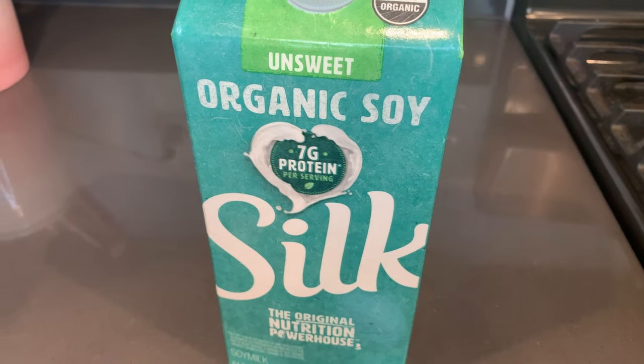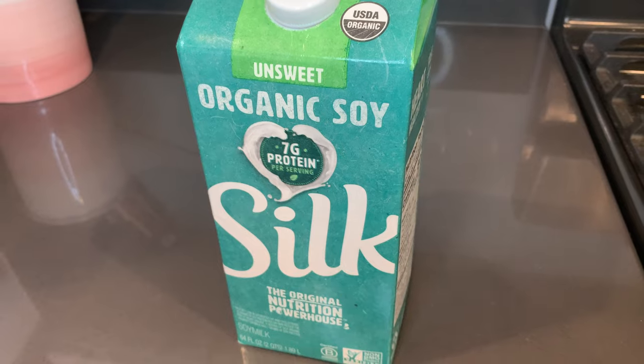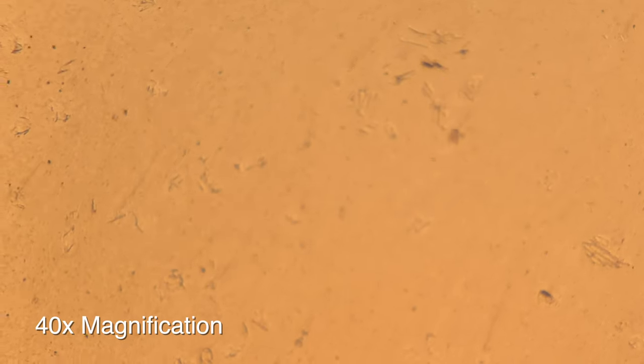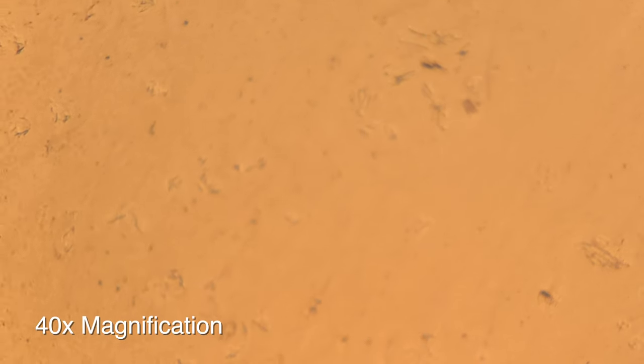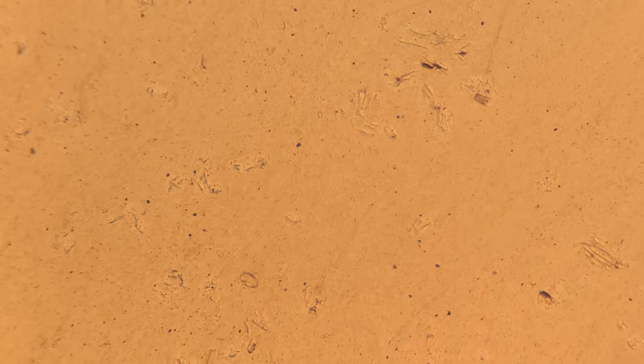Last but not least, we're going to look at the soy milk. This is essentially soybean juice and filtered water, so obviously this one's going to look a lot different. Basically, what we're looking at is just the ground-up remains of soybeans. It's not too exciting, but it's kind of cool to see the difference between this and all of the other milks.